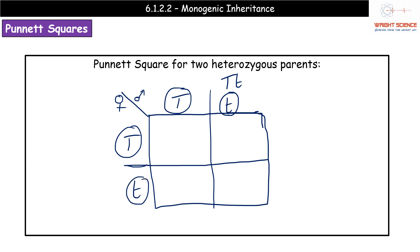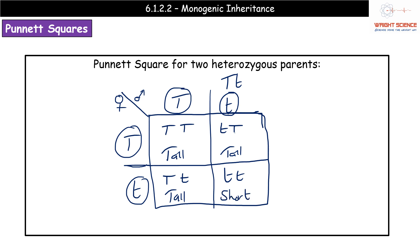We put our gametes in a circle because they are gametes, to make it nice and clear. Then all we do is: whatever's at the top, fill it in the two boxes beneath; and whatever is on the left, fill it in the two boxes on the right. We've now got the potential offspring genotypes. Identifying phenotypes: we've got tall with two capitals, tall with one capital here, another tall in the bottom left, and short in the last box. So we find three tall and one short.